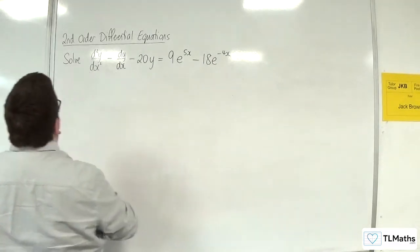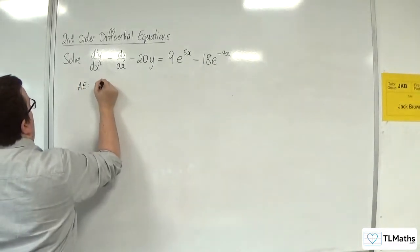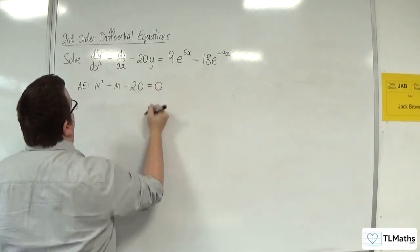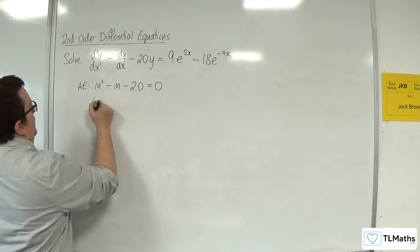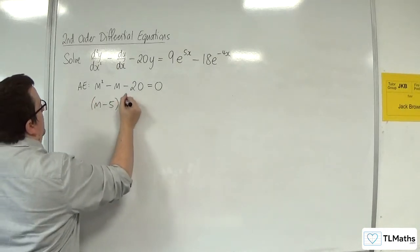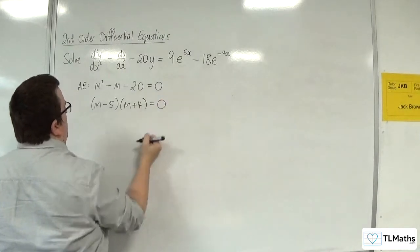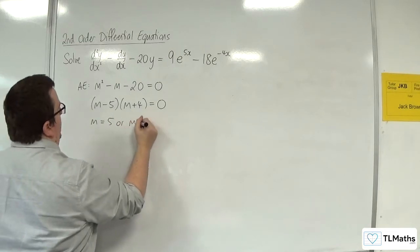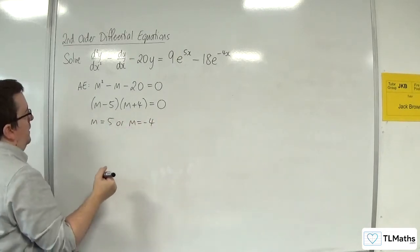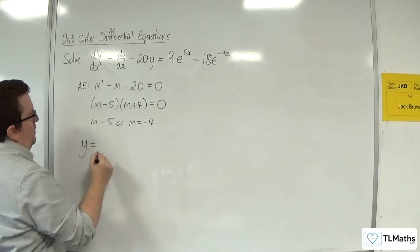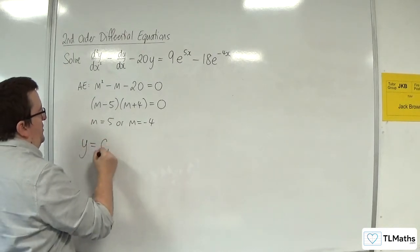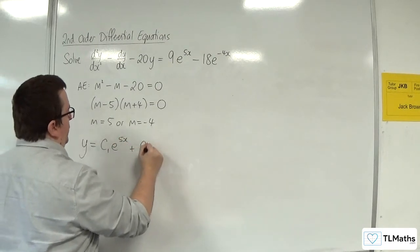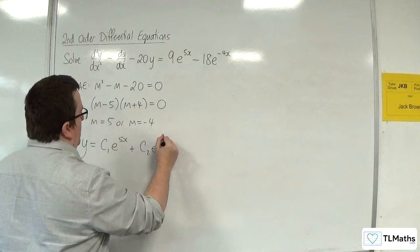So first of all, the auxiliary equation would be m² take away m take away 20 is equal to 0. Now this factorises to (m - 5)(m + 4) = 0, so either m = 5 or m = -4. So the complementary function would be y = c₁e^(5x) + c₂e^(-4x).